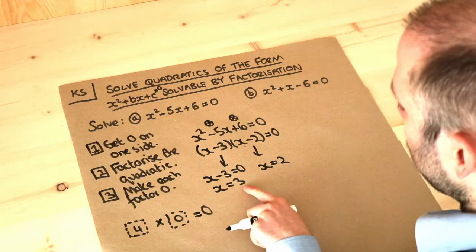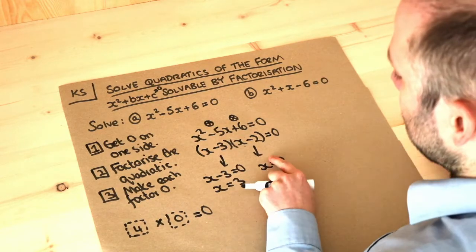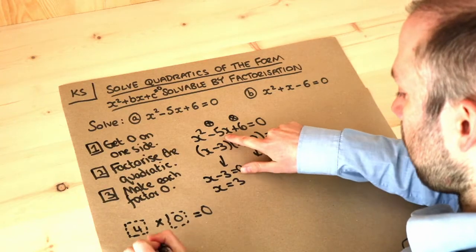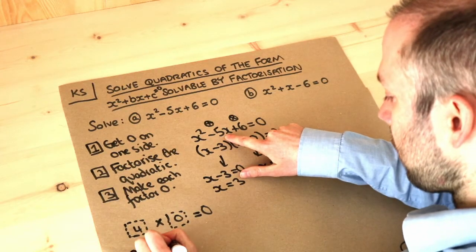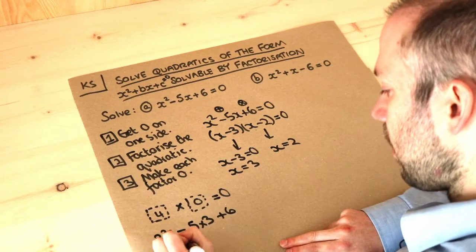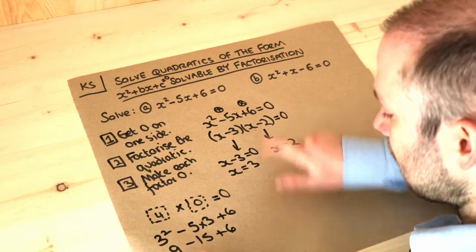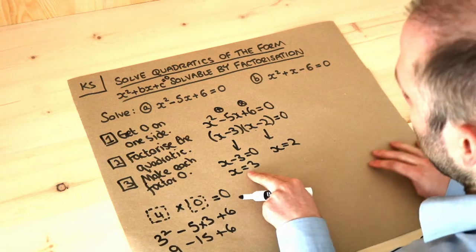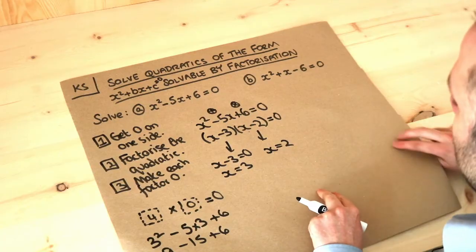And we can check whether these solutions work. If we take the three and substitute it into the equation, we would get three squared minus five times three plus the six, and that's nine minus fifteen plus six, and that indeed does give us zero because that's minus six plus six is zero. So that does work. It would similarly work if we substituted in the two.